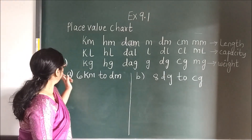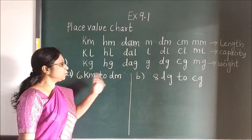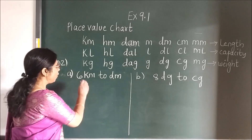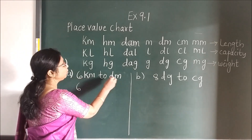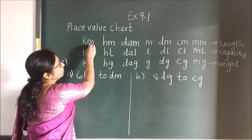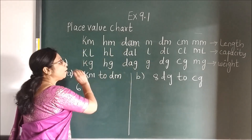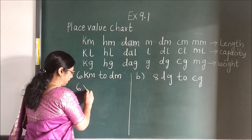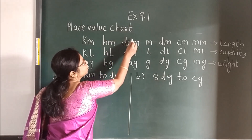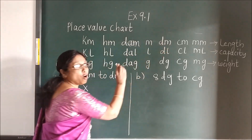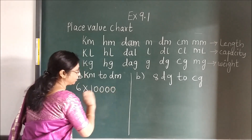Now we will see question number 2, E1. Here is kilometer to DM. Children, first write the number as given. KM is here, DM is here. So we are moving right — multiply. Now how many times are you moving? Count: 1, 2, 3, 4. So you are multiplying by 10,000.